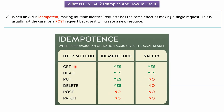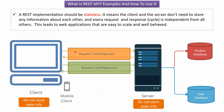The REST implementation should be stateless. Stateless means the client and server do not need to store any information about each other, and every request-response cycle is independent from all others. This leads to web applications that are easy to scale and well-behaved. For example, request2 and response2 are totally independent from request1 and response1 — they do not depend on each other. This is what stateless means.